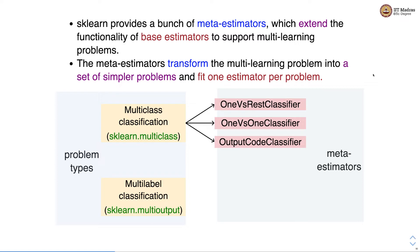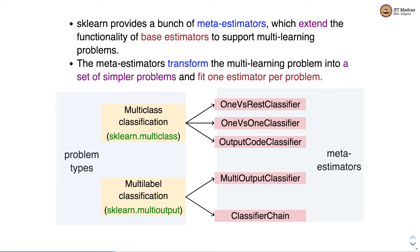For multi-class classification we have three meta estimators: one versus rest classifier, one versus one classifier, and output code classifier. We will focus on the first two — one versus rest and one versus one — in this video. For multi-label classification, we have two meta estimators: multi-output classifier and classifier chain.